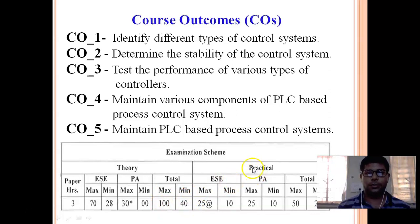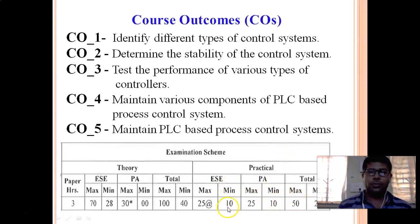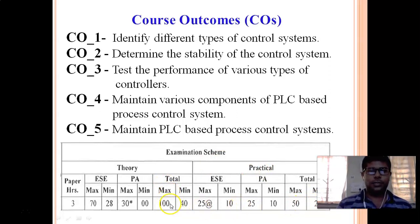In practical, there are also two types: End Semester Examination and Progress Assessment. For ESE practical, maximum marks are 25 and minimum passing is 10. For PA practical, maximum is 25 and minimum is 10. Total practical marks are 50, with a passing criteria of 20 marks. Combined, the total subject marks are 150.